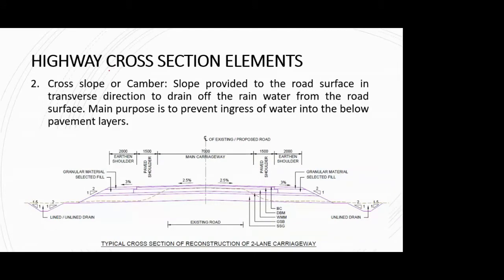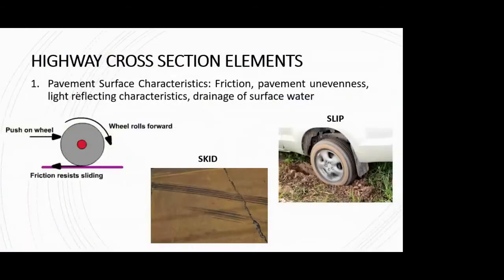Now we are in a position to understand what are the different aspects of a highway cross section. The first aspect we studied a couple of lectures back was pavement surface characteristics — mainly friction (longitudinal and lateral) and pavement unevenness — how friction is important, how pavement unevenness is undesirable, and how it is measured.